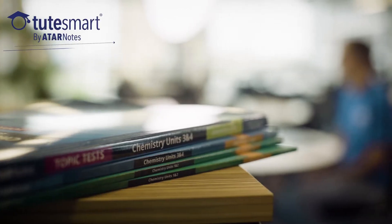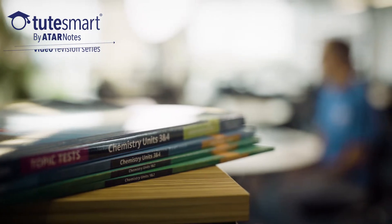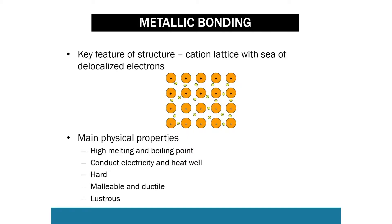Metals tend to form cations, positively charged ions. This is because they find it easier to lose electrons than to gain electrons. When metals bond together they form a regular lattice. As shown in the diagram, the positively charged ions are arranged in a neat lattice, in rows and in columns, and then we have free electrons floating around.